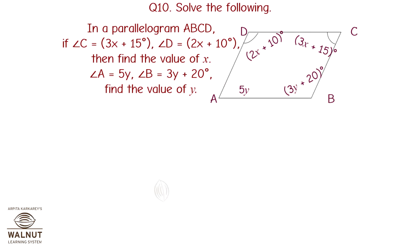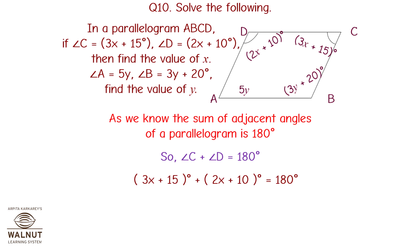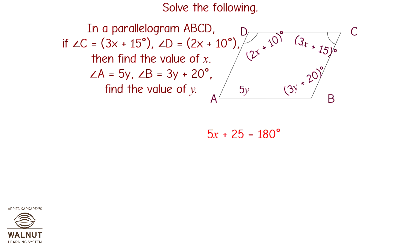In parallelogram ABCD, angle C equals 3X plus 15 degrees and angle D equals 2X plus 10 degrees. Find X. Since adjacent angles of a parallelogram sum to 180 degrees, angle C plus angle D equals 180. So 3X plus 15 plus 2X plus 10 equals 180, giving 5X plus 25 equals 180, so 5X equals 155, and X equals 31 degrees.